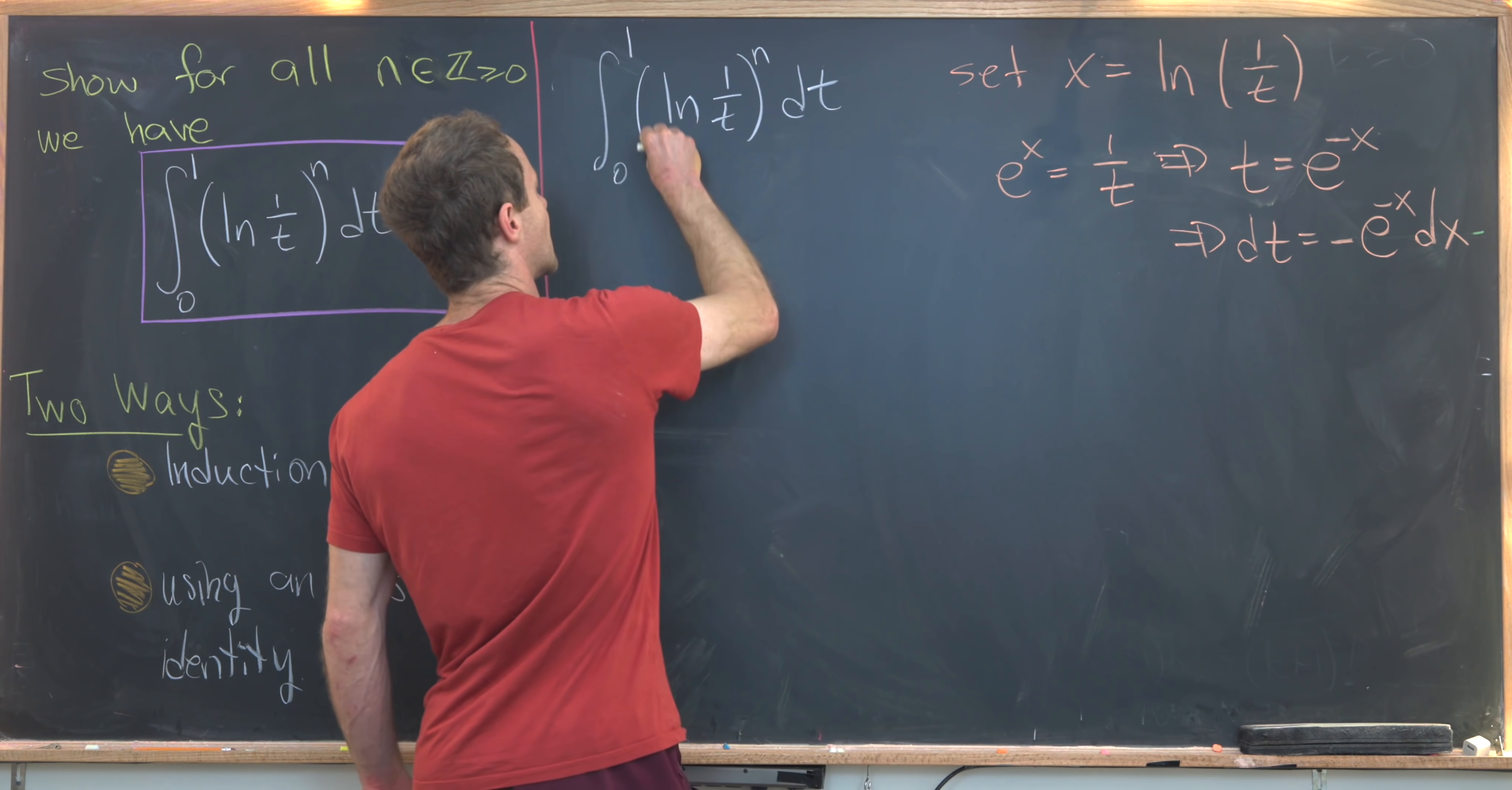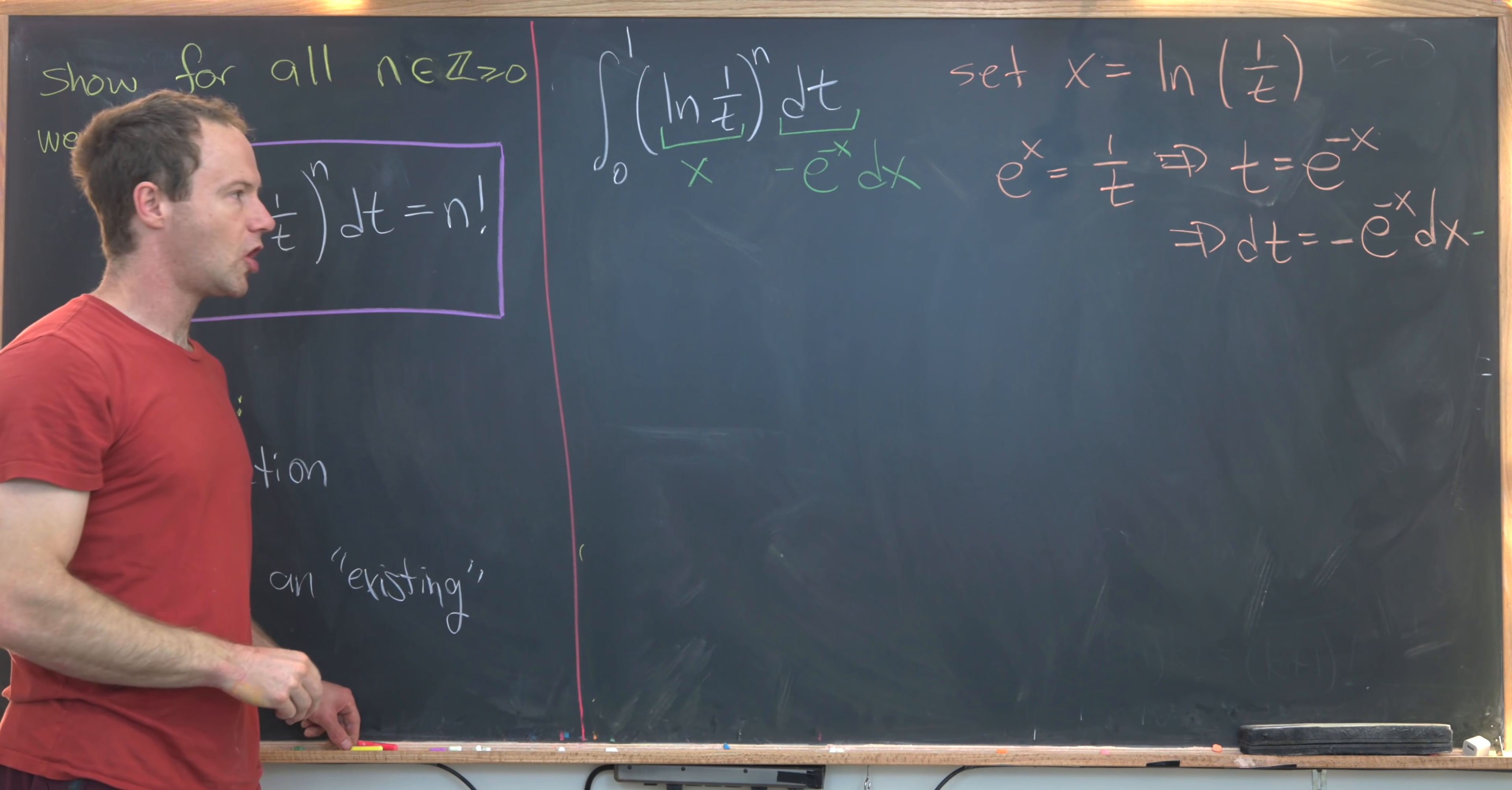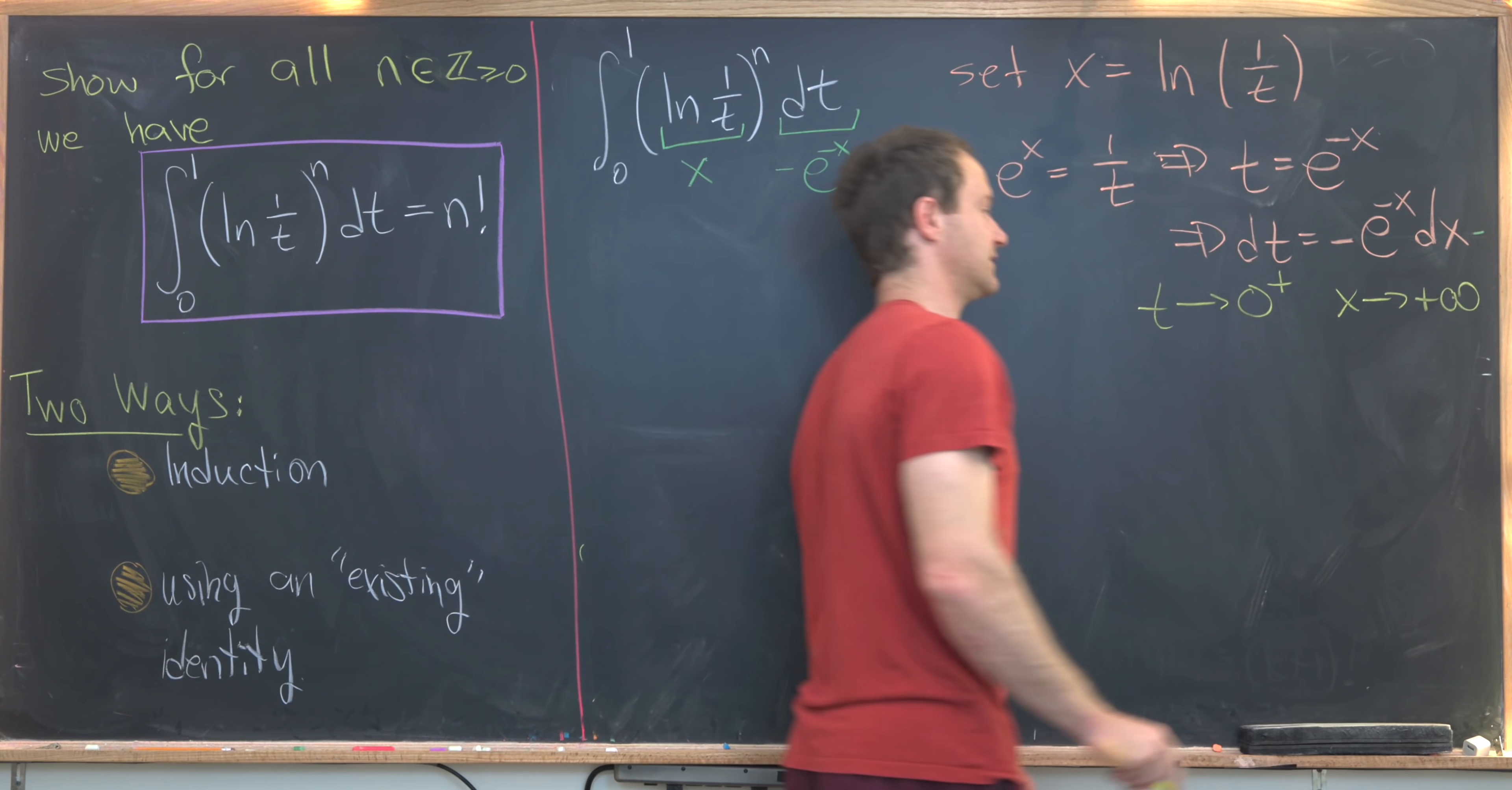So let's see what we've got. We can replace all of this with x by our substitution, and then we can replace this entire dt with minus e to the minus x dx. That's almost everything that we need. We also need to see what happens to the bounds of integration. So notice, as t goes to 0 from above, that means e to the x is going to infinity, but that means x is going to infinity. And in fact, it's positive infinity.